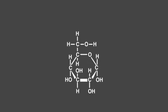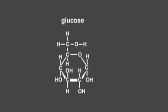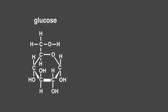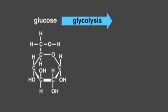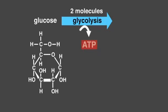Cells break down food molecules, such as glucose, through multi-step pathways. In the process of glycolysis, the breakdown of one glucose molecule into two three-carbon molecules produces a net gain of energy that is captured by the molecules ATP and NADH.